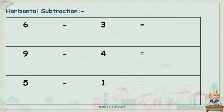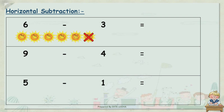Horizontal subtraction. 6 minus 3. Let's count: 1, 2, 3, 4, 5, 6 — and we have to subtract 3 from these. So let's cross out 1, 2, 3. Now how many are remaining? Let's count: 1, 2, 3. So our answer is 3.